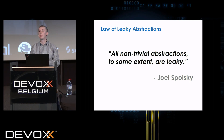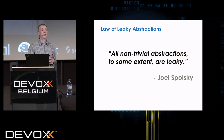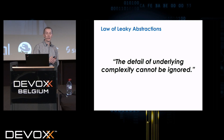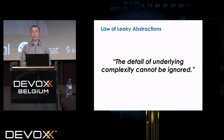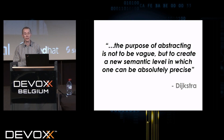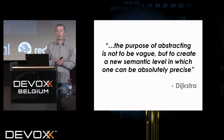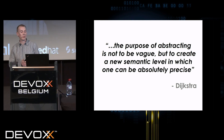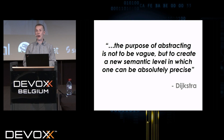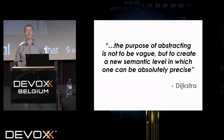Who's heard of Joel Spolsky's Law of Leaky Abstractions? He makes the statement: 'All non-trivial abstractions are to some extent leaky — the detail of underlying complexity cannot be ignored.' To me, this is just screaming out that this is not an appropriate abstraction; someone has abstracted for the wrong reasons. Let's look at how someone else describes abstraction. Back in 1972, when Dijkstra accepted his Turing Award, he had this gem: 'The purpose of abstracting is not to be vague, but to create a new semantic level in which one can be absolutely precise.' Abstractions can be good, but only when they give you more precision.